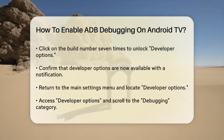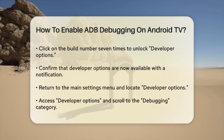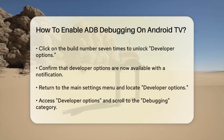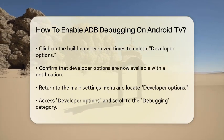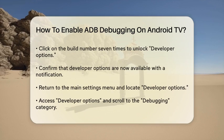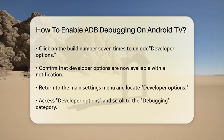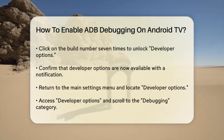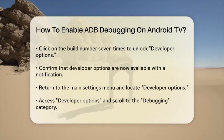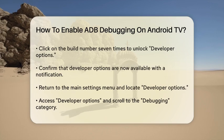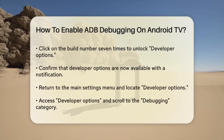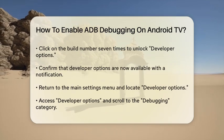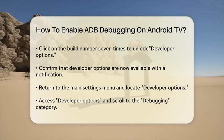Go back to the Main Settings menu and scroll down until you find the newly unlocked Developer Options. Open the Developer Options and scroll down to the Debugging category. Here, you'll find the ADB Debugging or USB Debugging option. Click on this to enable it.